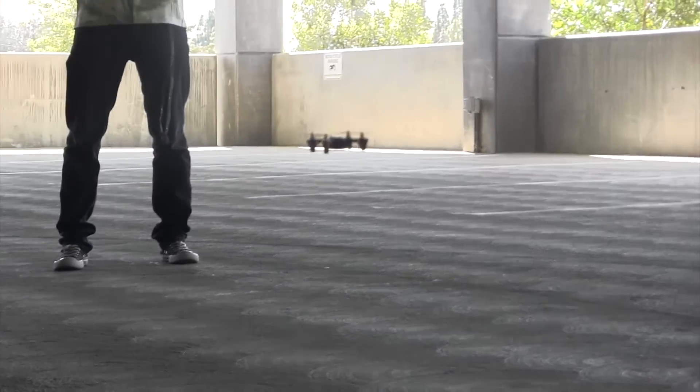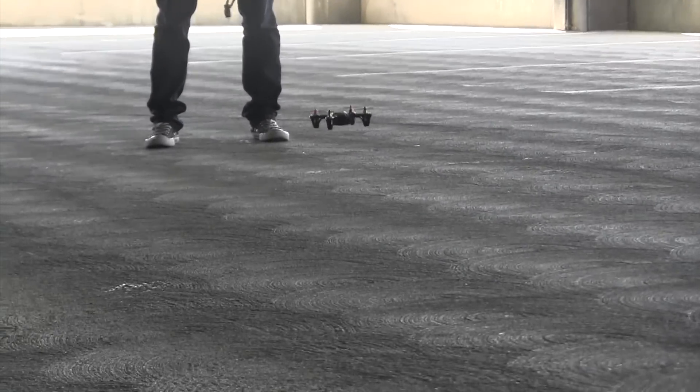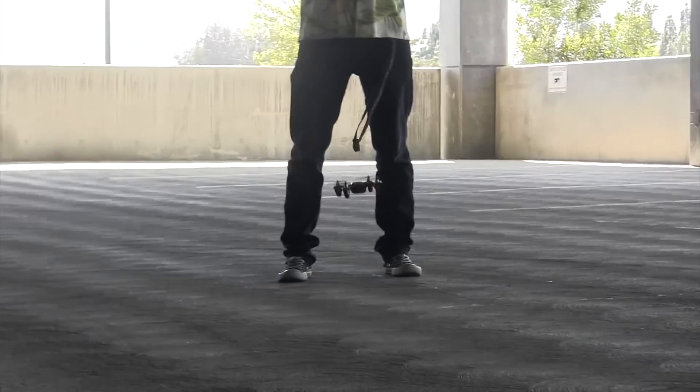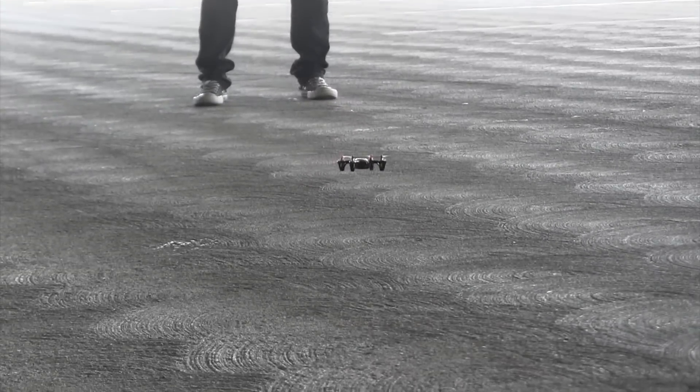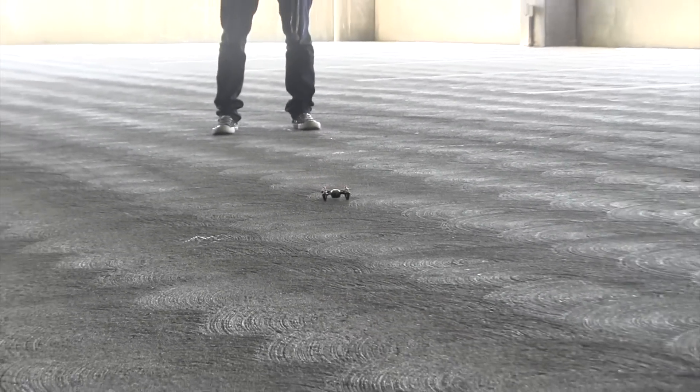To land, make sure the quadcopter is level by releasing the right stick. Then, slowly move the left stick down to decrease its height. Be sure not to descend too quickly.